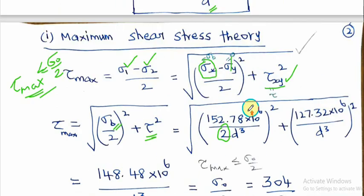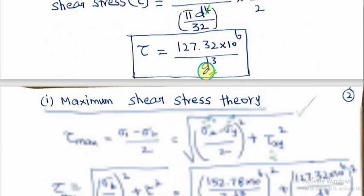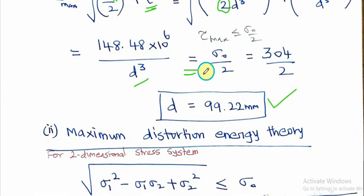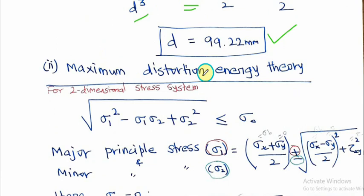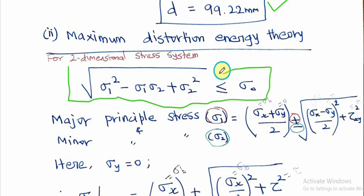So using the maximum shear stress theory, the diameter is approximately 99.22 mm. The next theory to apply is the maximum distortion energy theory, also known as the von Mises or Huber-Mises theory. Even though it uses a different formula, we can use the two-dimensional stress system since σ₃ = 0.